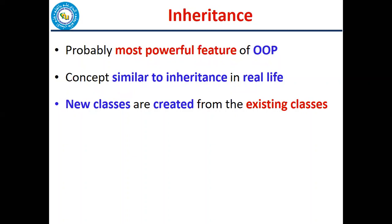When we get inheritance in real life, we get the same features in programming. We have created an existing class which is thoroughly tested and used before — we know that its functionality has no errors. Now if we can re-use this, we can inherit it. We can create a new class which has enhanced functionality and has similarities to the original. There is a concept of creating new classes from previous classes.